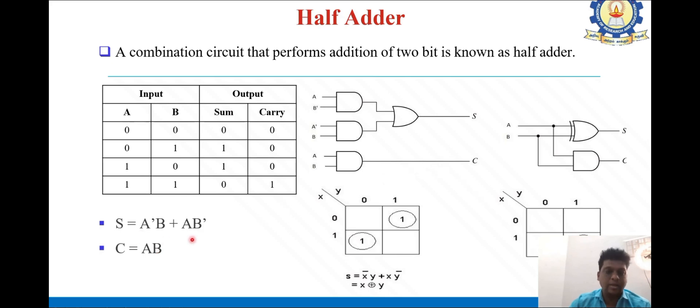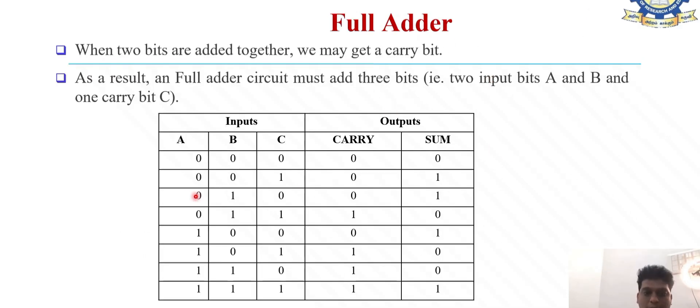Full adder means we are going to add three bits A, B, and C. We have combinations from 0 to 7. Same procedure: sum and carry. We are adding in this direction—0 plus 0, then that output with this output—to get sum and carry.